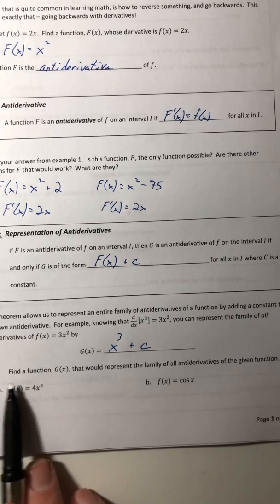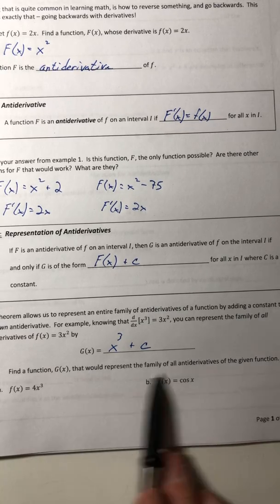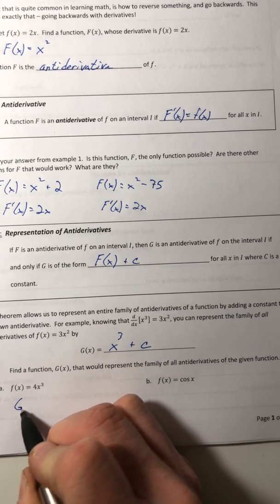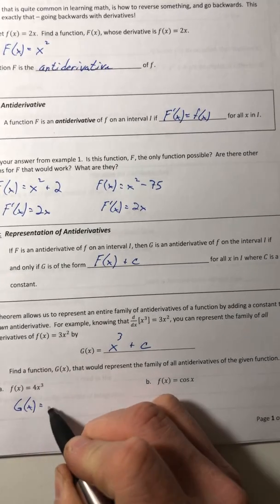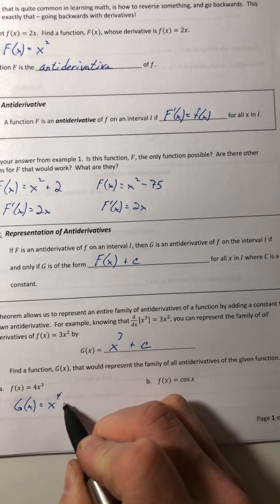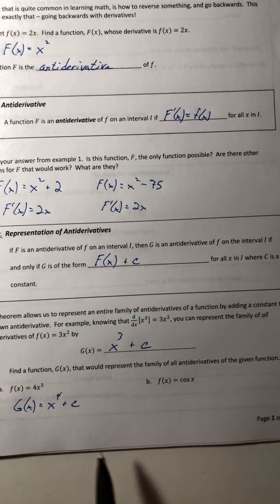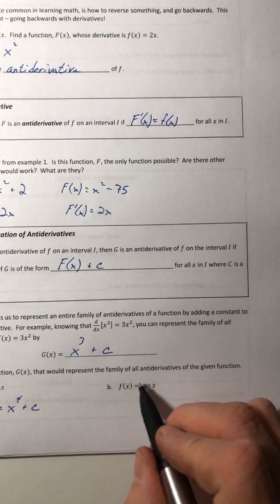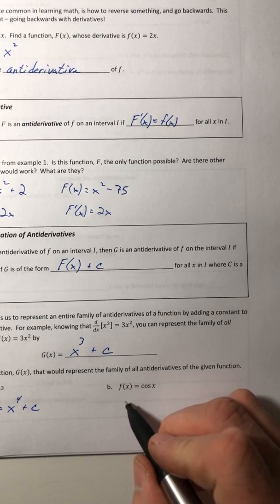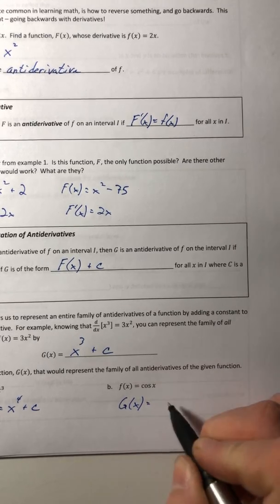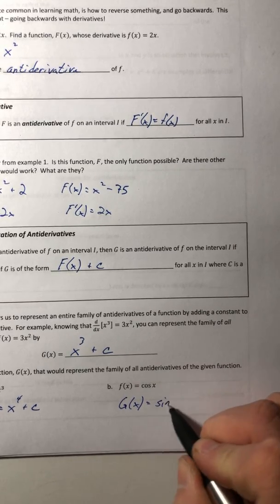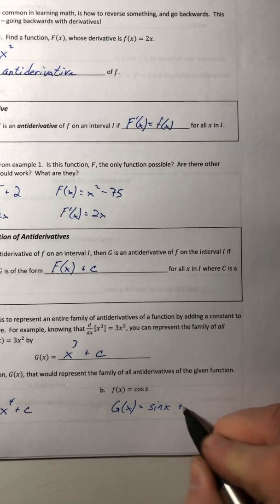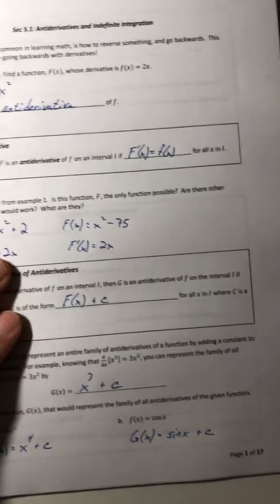For example two, find the function g that will represent the family of this function. So that would be x to the fourth plus c. For part b, for that cosine whose derivative is cosine, well that would have to be sine, and then to get the family of all of them, you put that plus c at the end.